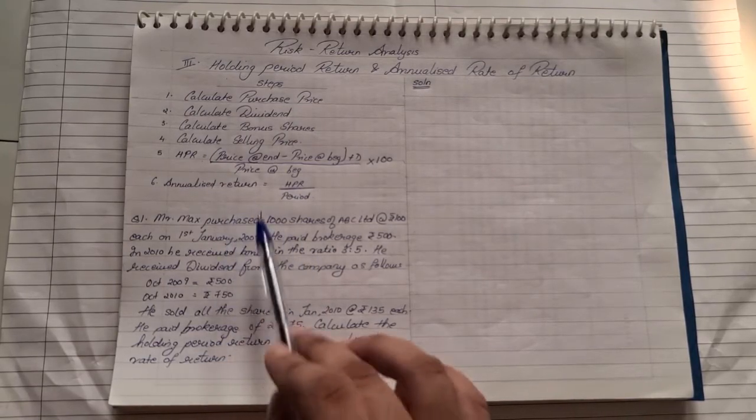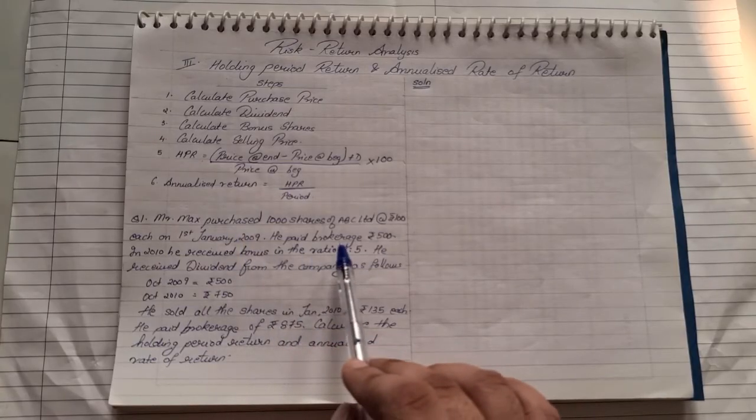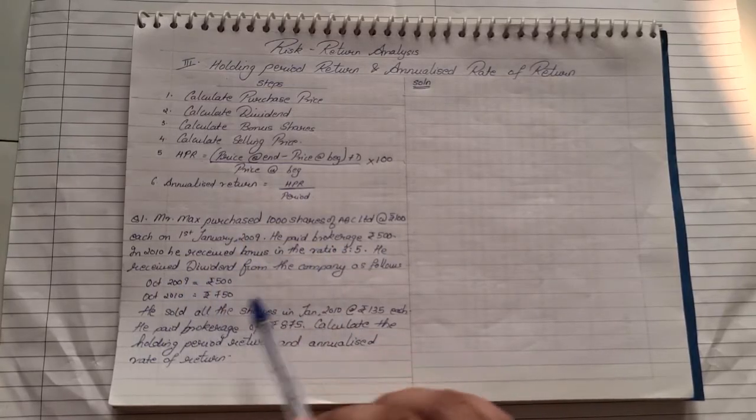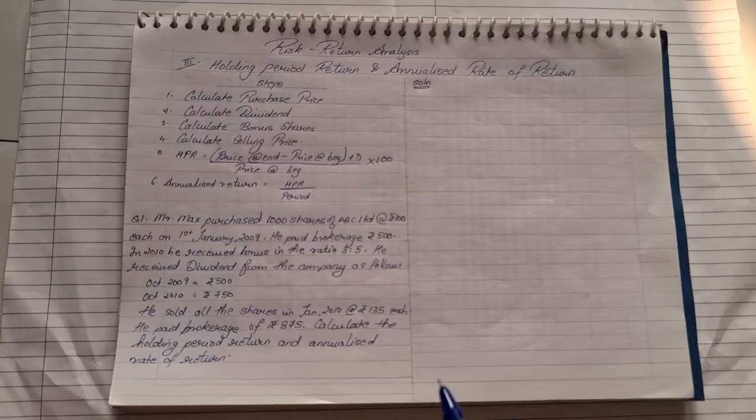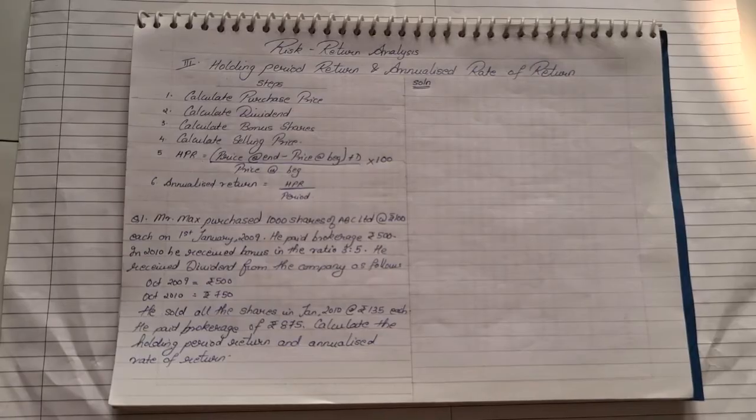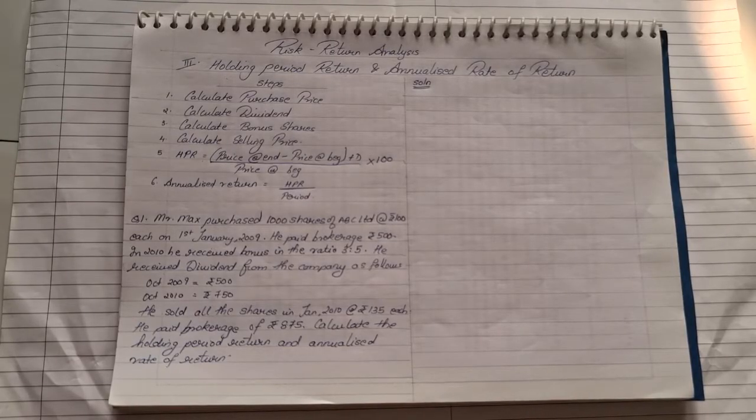Calculate the holding period return and the annualized rate of return. Now, if you look, the sum has something related to purchase. It has bonus, it has dividend and it has the values of sales. Along with that, there are some brokerage also involved. Now, always remember on purchase, we add brokerage and on sales, we will less brokerage. Brokerage gets always added to purchase and it always gets subtracted from sales.